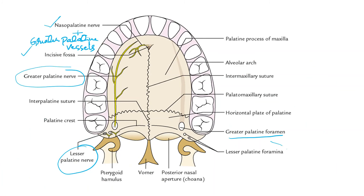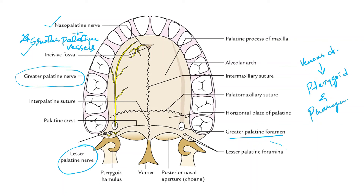Moving on to the arterial supply of the hard palate: the entire hard palate is supplied by the greater palatine arteries, which are a branch from the third part of the maxillary artery. The venous drainage of the hard palate is through the pterygoid venous plexus and the pharyngeal venous plexus.